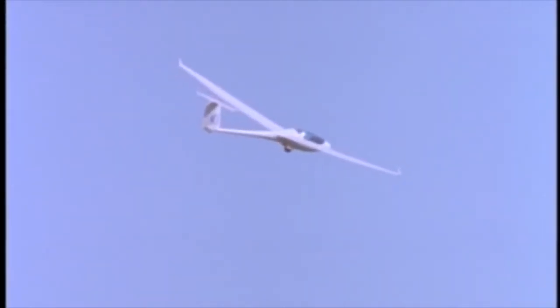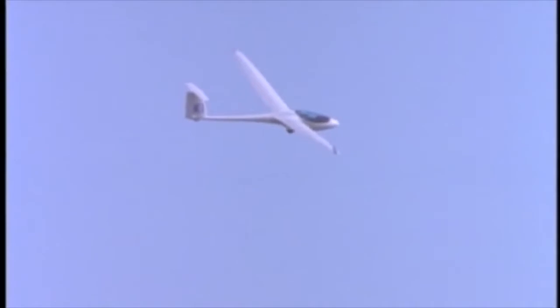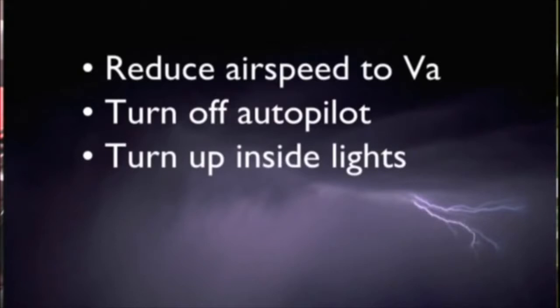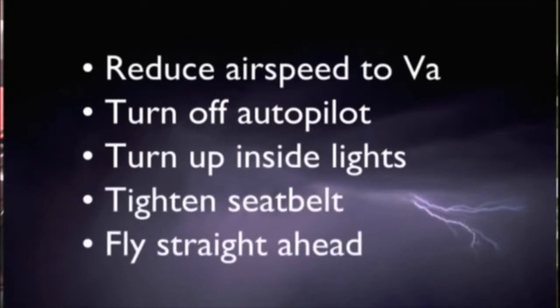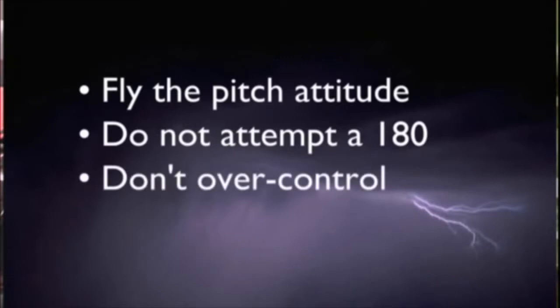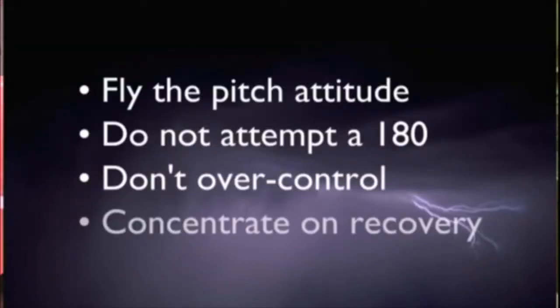Thunderstorms are extremely dangerous, especially in small aircraft. Even the most skilled pilot is no match for a thunderstorm — any thunderstorm. This is a fundamental aspect of aeronautical decision-making. If you do find yourself in a thunderstorm, reduce your airspeed to VA, turn off the autopilot, turn up your inside lights to full intensity, tighten your seatbelt, and fly straight ahead. Fly the pitch attitude, not the altimeter. Do not attempt a 180. Do not try to over-control the airplane — just try to gently keep it right side up and close to VA. When it spits you out, concentrate on a smooth recovery.